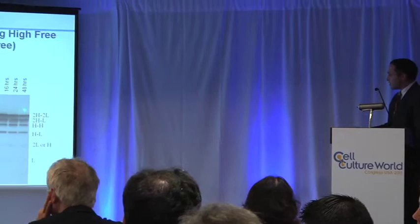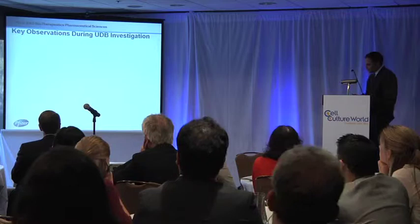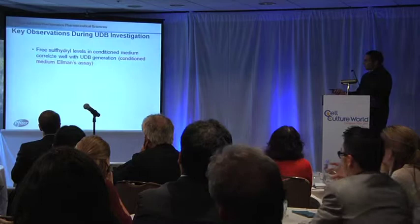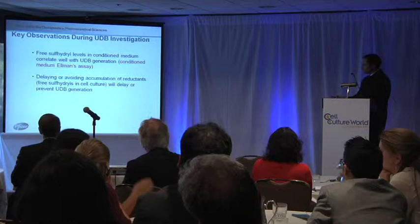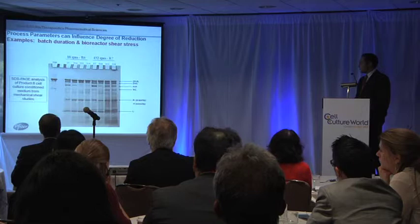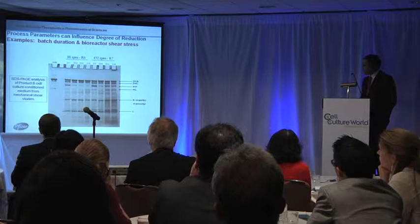We implemented some development campaigns. With this particular product — product A — what we saw was that the antibody was reduced using high-free-sulfhydryl-containing conditioned media. You can see a control sample and then incubating it in conditioned media containing high free sulfhydryls, showing a reduction in antibody. The intact antibody is the top band, with partial species in the other lanes once incubated. This gave us an understanding of what was going on with UDB — specifically, free sulfhydryl levels in the conditioned media correlated well with UDB. We observed that delaying the accumulation of these reductants led to lower or prevented UDB.